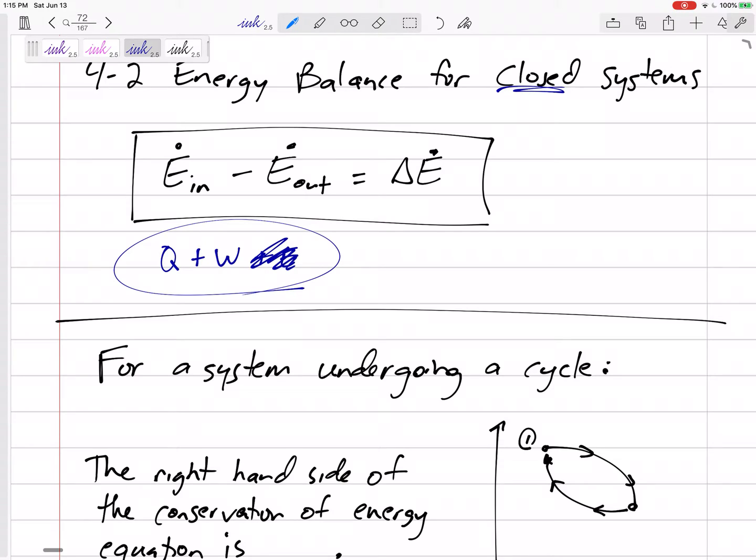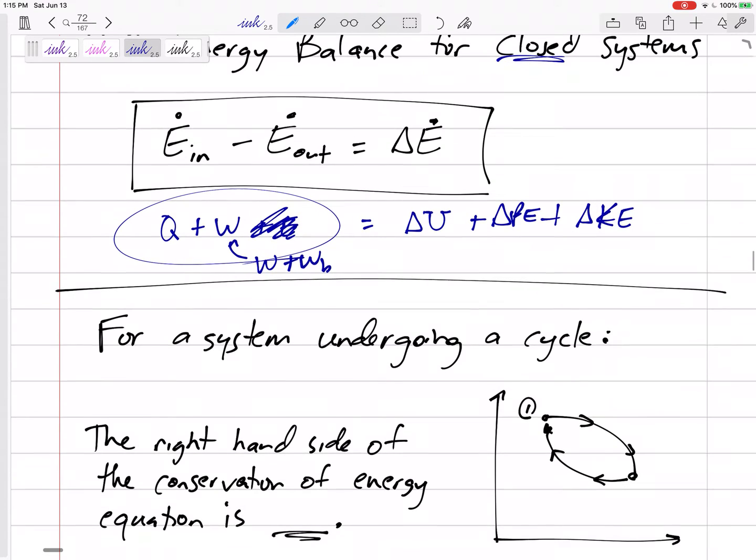We're looking for heat that's crossing the boundary. We're looking for work that's crossing the boundary, like shaft work, like electrical work, like springs. We're also looking for boundary work. So this work could be the work that we're used to plus the boundary work. All right? And then the right-hand side is delta U, delta PE, delta KE.